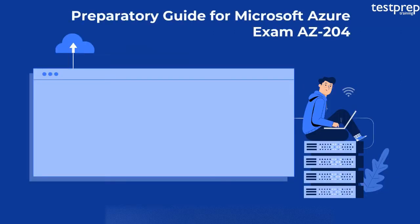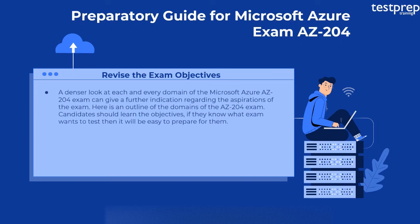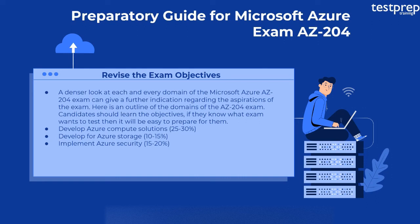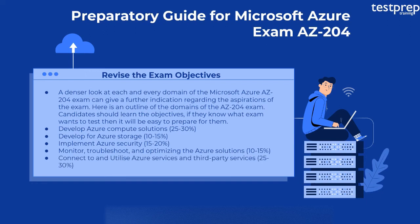Now we will discuss the Preparatory Guide for Microsoft Azure Exam AZ-204. Let us discuss some necessary steps to prepare for the exam. First, revise the exam objectives. A closer look at each domain of the AZ-204 exam can give further indication regarding the aspirations of the exam. Candidates should learn the objectives — if they know what the exam wants to test, it will be easy to prepare. The domains are: Develop Azure Compute Solutions 25–30%, Develop for Azure Storage 10–15%, Implement Azure Security 15–20%, Monitor, Troubleshoot, and Optimize Azure Solutions 10–15%, and Connect to and Utilize Azure Services and Third-Party Services 25–30%.